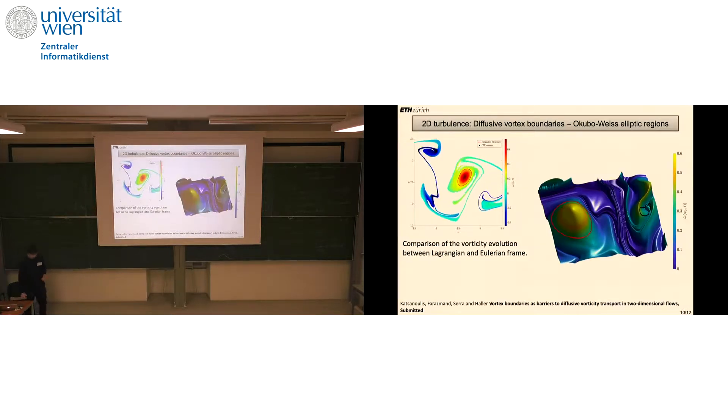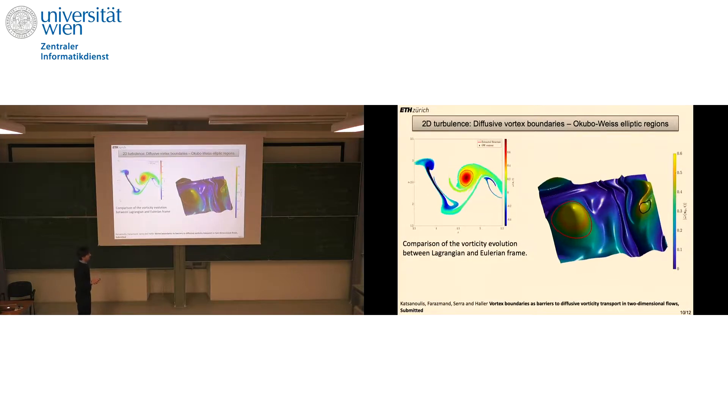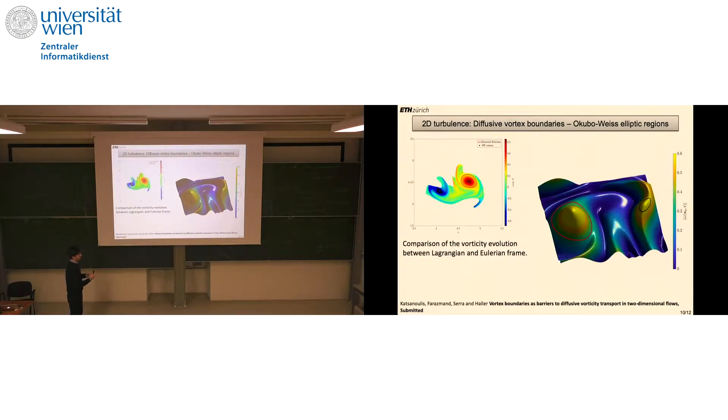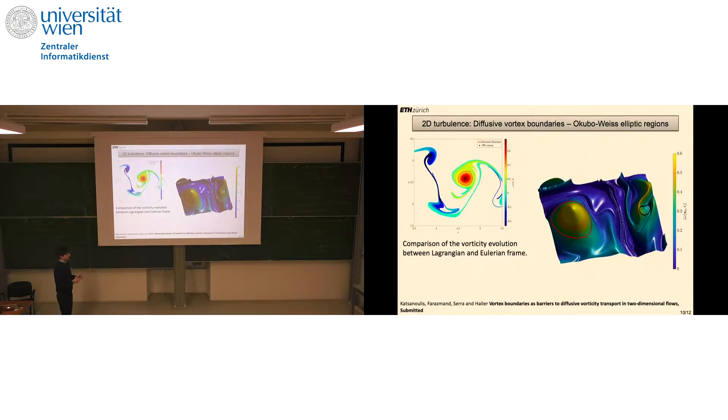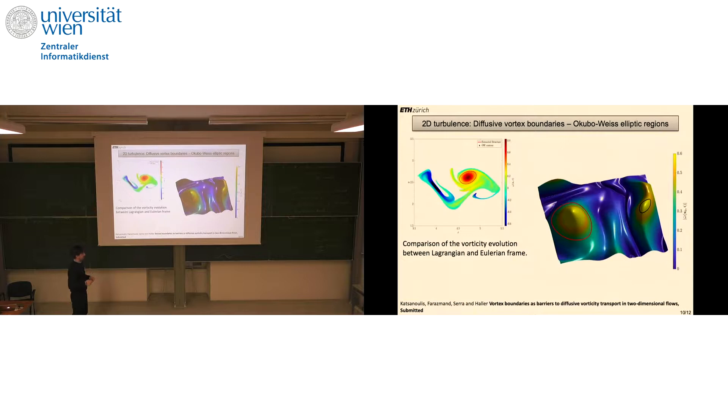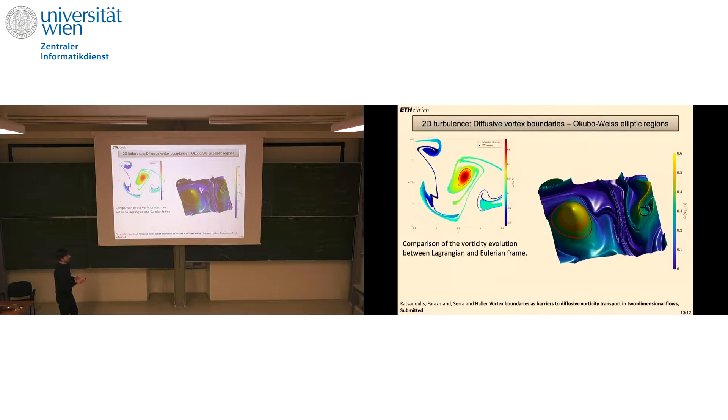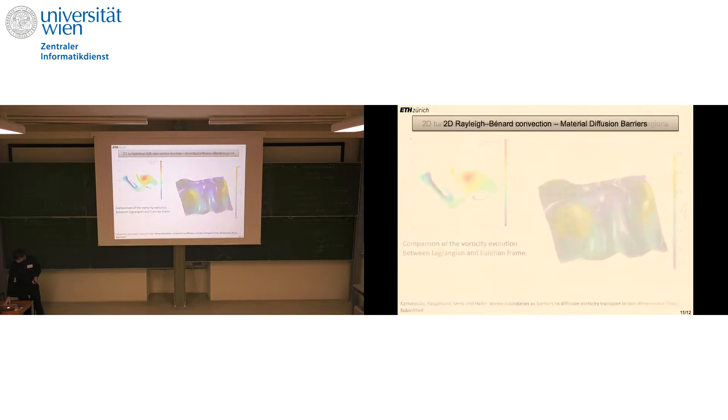The same conclusion can be derived here, where we see in the background in Lagrangian coordinates what is happening. Practically, what I did to compute this surface was track how the normal vorticity would change along the trajectories I advected, and map back to their initial position. As you can see, the normal vorticity for the diffusive vortex boundary diffuses very evenly all along this curve, whereas for the Okubo-Weiss iso-contour, we see preferential directions through which it diffuses the most.